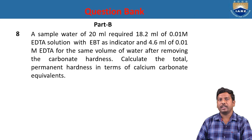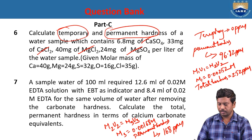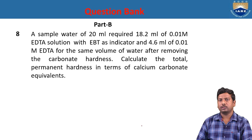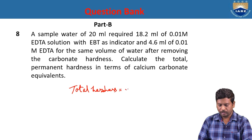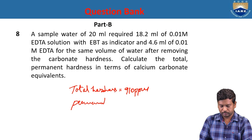Problem 8: A water sample of 20 ml required 18.2 ml of 0.01 molar EDTA solution with EBT as indicator, and 4.6 ml of 0.01 molar EDTA for the same volume after removing carbonate hardness. Calculate total and permanent hardness in terms of calcium carbonate equivalence. Total hardness = 910 ppm and permanent hardness = 230 ppm.